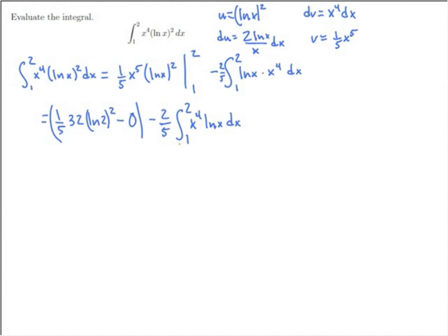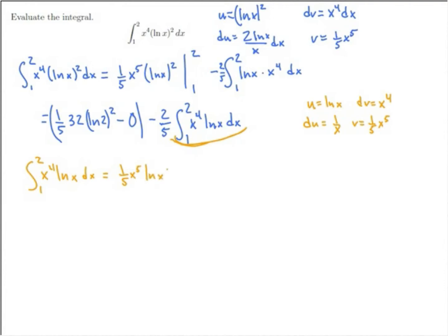I'm going to need another integration by parts, focusing just on that remaining integral. If I let u again be natural log of x and dv be x to the fourth, then du is 1 over x and v is 1/5 x to the fifth. So the integral from 1 to 2 of x to the fourth natural log of x is uv — 1/5 x to the fifth natural log of x from 1 to 2 — minus the integral from 1 to 2 of v du, which is 1/5 x to the fourth dx.